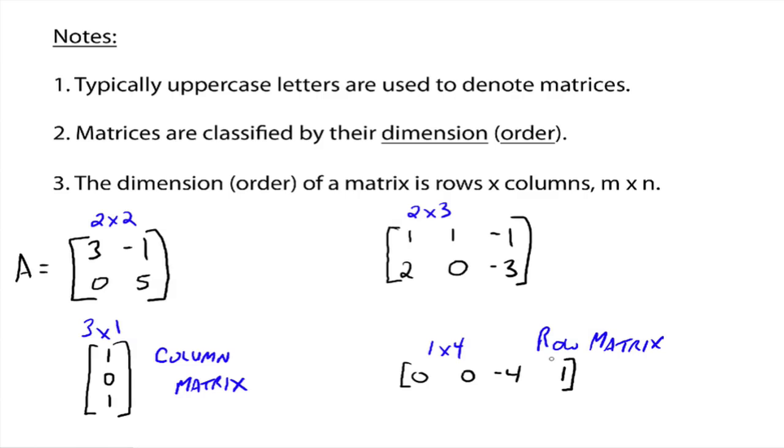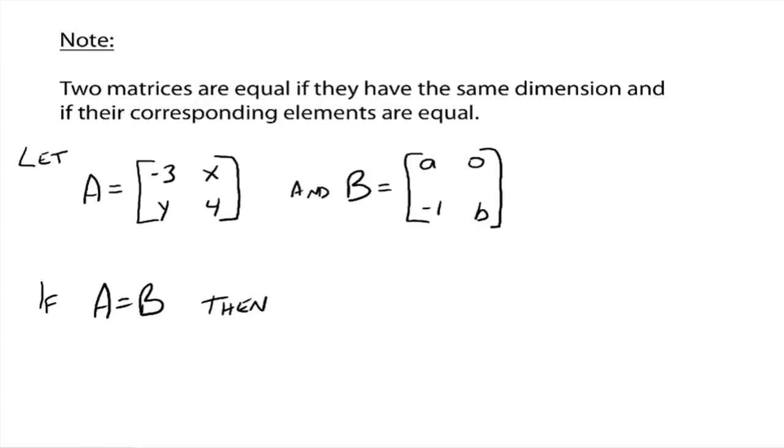So the dimension of a matrix, just the rows by columns. All right, another note. Two matrices are equal if they have the same dimension and their corresponding elements are equal. So here are two matrices. This one's a 2 by 2, and this one's a 2 by 2. So if they're going to be equal, well, they have the same dimension, so they could be. So if A does equal B, then what has to be true?